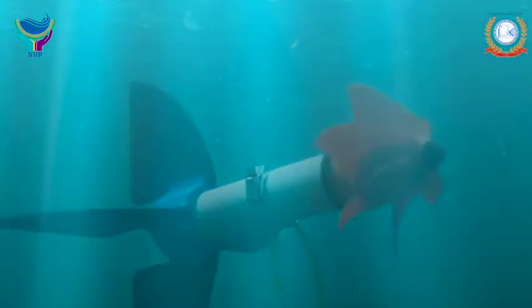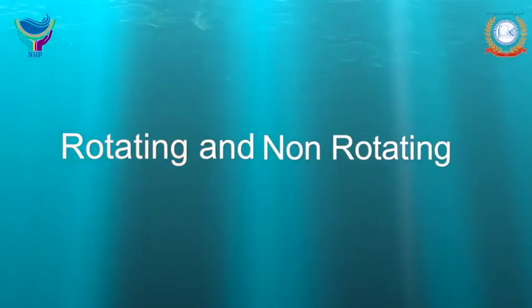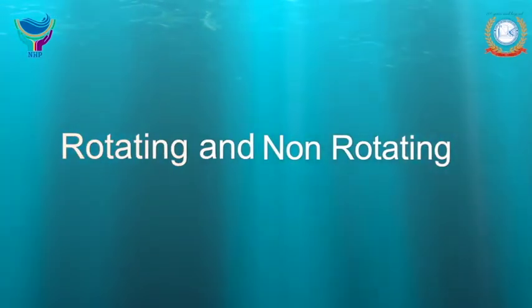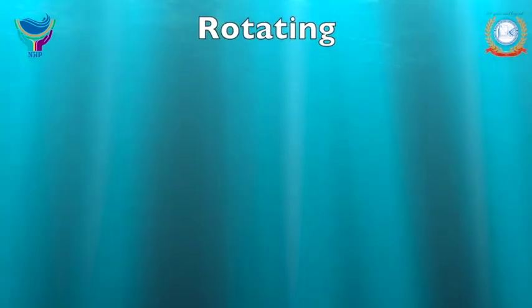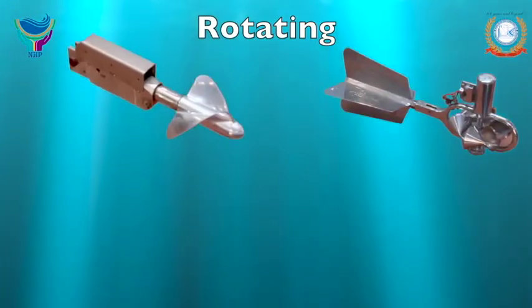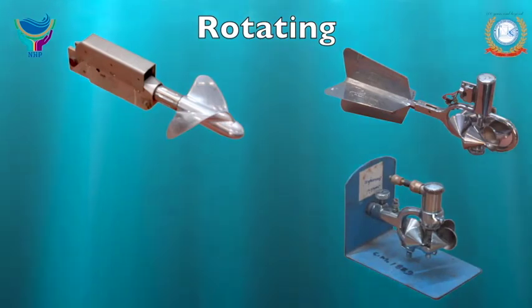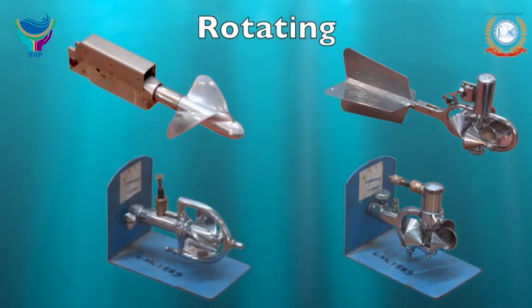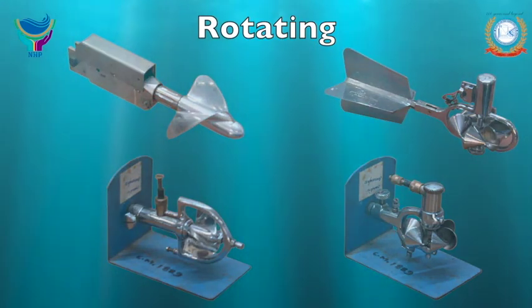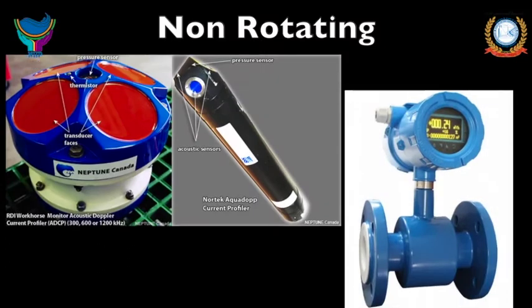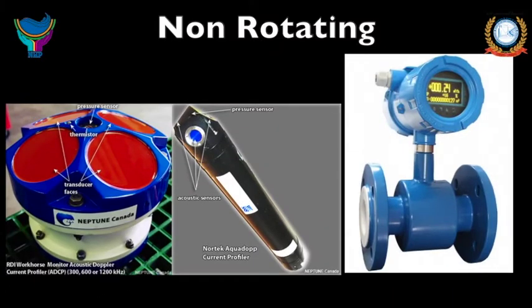Mainly, the rotating and non-rotating type instruments. The rotating element type current meters include cup, propeller, pygmy cup, and pygmy propeller, which have been used for more than 100 years throughout the world. The non-rotating or stationary type current meters include electromagnetic types, which work on Faraday's law.